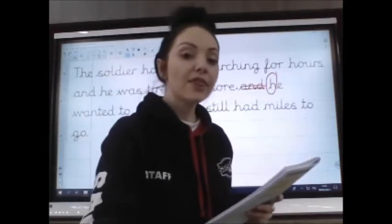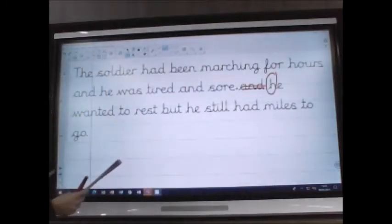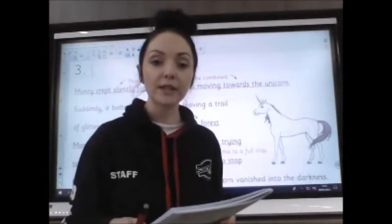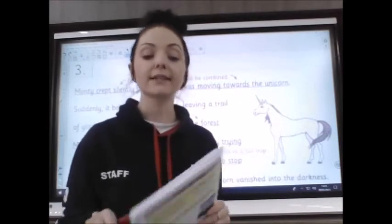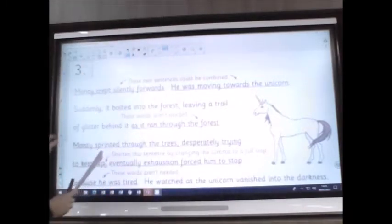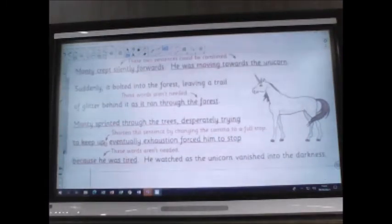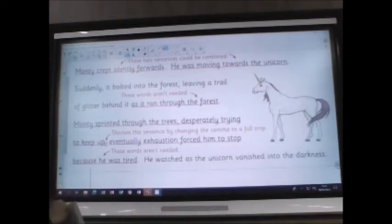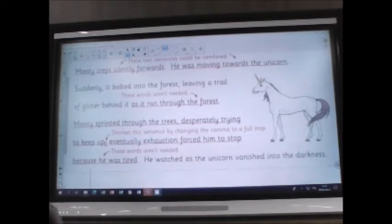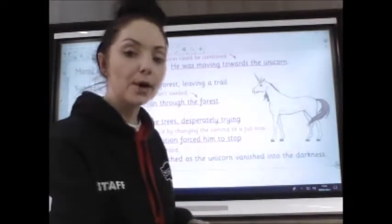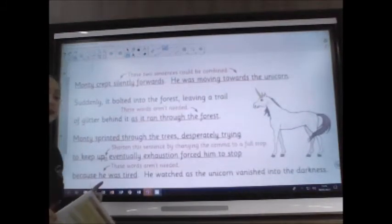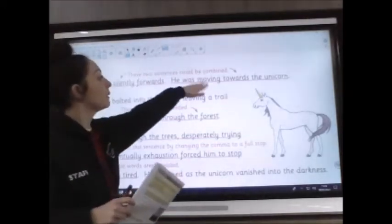Question three says this is an extract from a fantasy story about a unicorn. Some suggestions have been written on it in red. Read the extract and then read the suggestions. So reading the black words first: 'Monty crept silently forwards. He was moving towards the unicorn. Suddenly it bolted into the forest, leaving a trail of glitter behind it as it ran through the forest. Monty sprinted through the trees, desperately trying to keep up. Eventually, exhaustion forced him to stop because he was tired. He watched as the unicorn vanished into the darkness.' Make sure you've got this in front of you — you can't quite see it on my board. These two parts have been underlined.